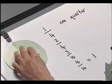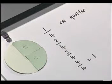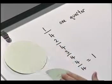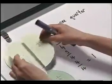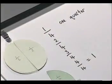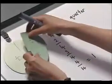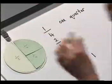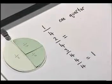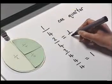Let's just return for a moment to the two quarters. Now two quarters is exactly the same as if I'd started with my whole and actually divided it into two pieces of equal size, and you can see that that's exactly the same as two quarters. So I can write two quarters as one half.